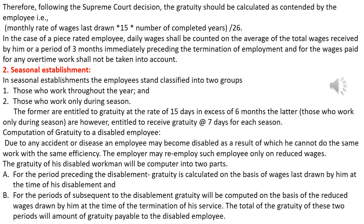Computation of Gratuity for a disabled employee is also covered here. Due to an accident or disease, an employee may be disabled and unable to perform the same work with the same efficiency. The employer may re-employ such an employee on reduced wages. Gratuity for this disabled worker is computed in two parts: for the period preceding the disablement, Gratuity is calculated on the basis of wages last drawn; and for the period subsequent to the disablement, Gratuity is computed on the basis of the reduced wages drawn at the time of termination. The total of these two amounts is the Gratuity payable to the disabled employee.